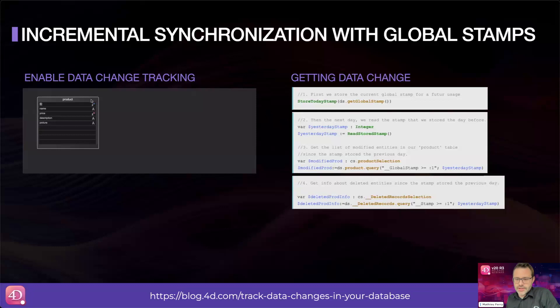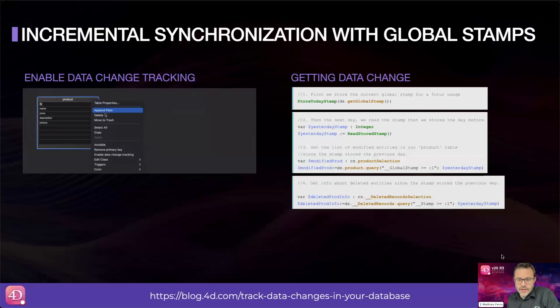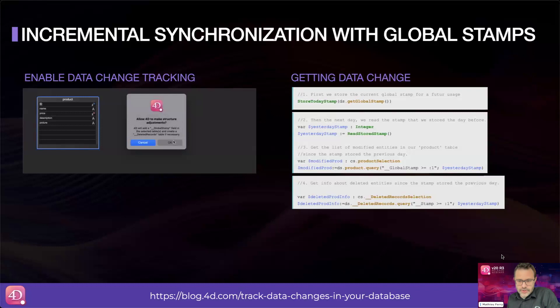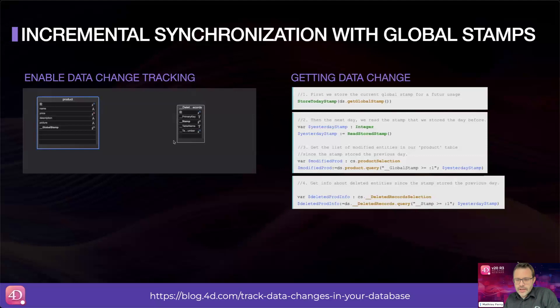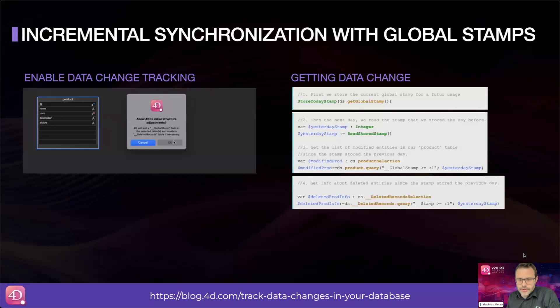In practical terms, with global stamp you can easily update and synchronize data by transferring only the changes made since the last synchronization. To use this feature, you first need to activate it on the tables you consider relevant. You will notice that 4D then enhances your structure with a global stamp field and a deleted records table. Then you just need to use two new functions: get global stamp and set global stamp.